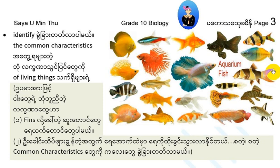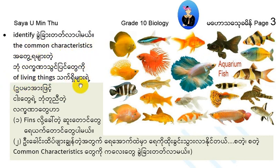In Chapter 1, there are two main characteristics of living things. Identify the common characteristics of living things. Chapter 1 is the characteristics of living things. What are the characteristics of living things?